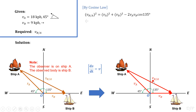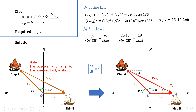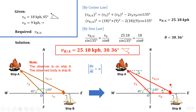And then by substitution, we can get a magnitude of 25.18 kph. Since relative velocity is a vector quantity, its direction must also be determined. Based on our new drawing, let's denote by theta the inclination of the relative velocity with respect to horizontal. And then by sine law, we can formulate this equation using the obtained magnitude of relative velocity. With theta as the only unknown, we can now get its value to be equal to 30.36 degrees. Therefore, the relative velocity of ship B with respect to ship A is equal to 25.18 kph, 30.36 degrees with respect to the horizontal.